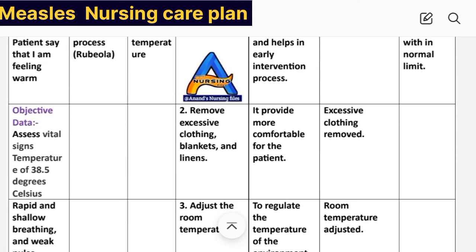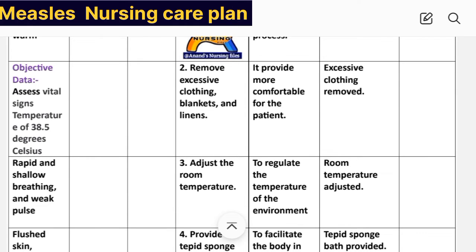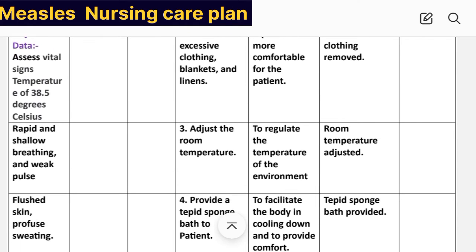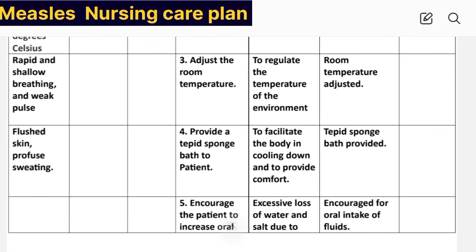Intervention number two: remove excessive clothing, blankets, and linens. Rationale: provides more comfort for the patient. Implementation: excessive clothing removed. Intervention number three: adjust the room temperature. Rationale: to regulate the temperature of the environment. Implementation: room temperature adjusted.